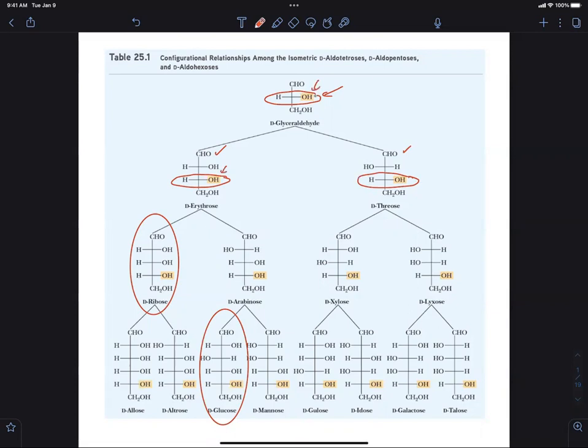To switch stereochemistry, you switch the location left to right of the functional groups, the OH and the hydrogen. So when you compare erythrose to threose, you can see that the difference is the stereochemistry at this other position. They're both D-carbohydrates, but they have a different stereochemistry at the next position. When you look at the other common carbohydrates, you'll notice the same trend.